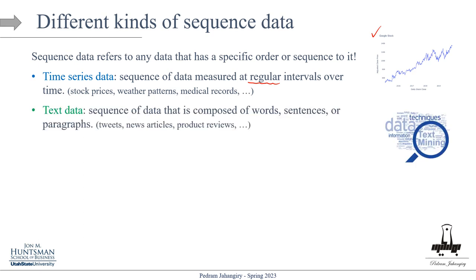The next type is text data — a sequence composed of words, sentences, and paragraphs. Examples are tweets, news articles, product reviews, and so on. Text data is commonly used in natural language processing applications such as sentiment analysis — for example, reviewing a movie and determining if the sentiment is positive or negative — text classification, and language translation.